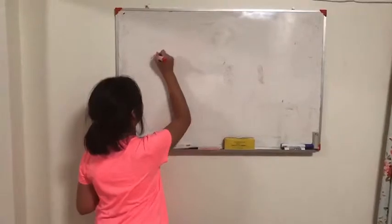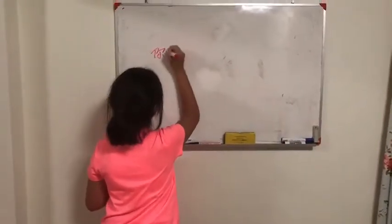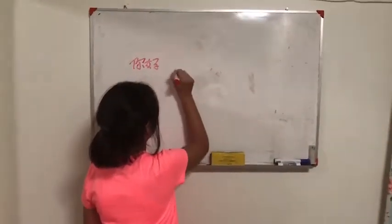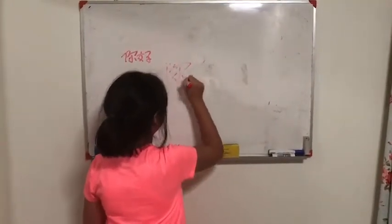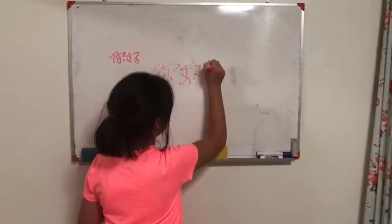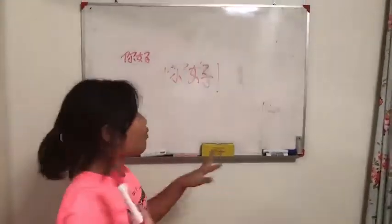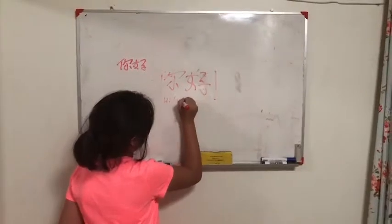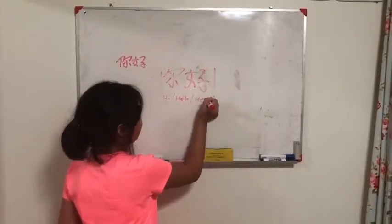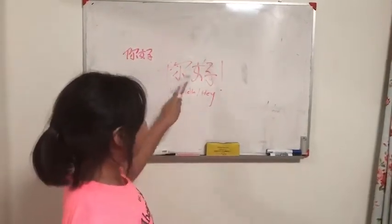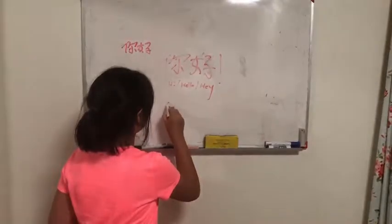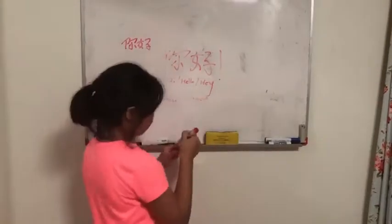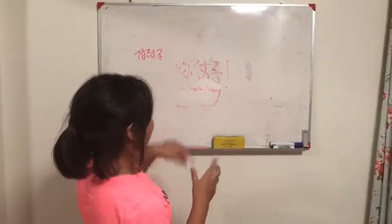So this first word is... I don't know if you can see this. 你好! What you all know is hi, or hello, or hey. 你好! 你 means you. And 好 means good. So if you don't know that 你好 means hello,